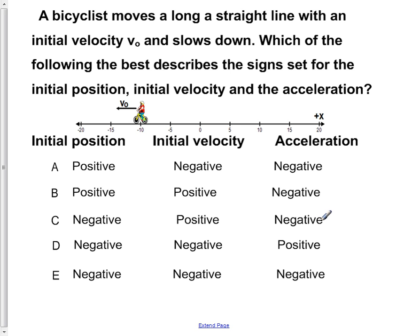A bicyclist moves along a straight line with an initial velocity, v-naught, and slows down. Which of the following best describes the signs set for the initial position, initial velocity, and the acceleration of the bicyclist, dependent upon the graph shown down here?